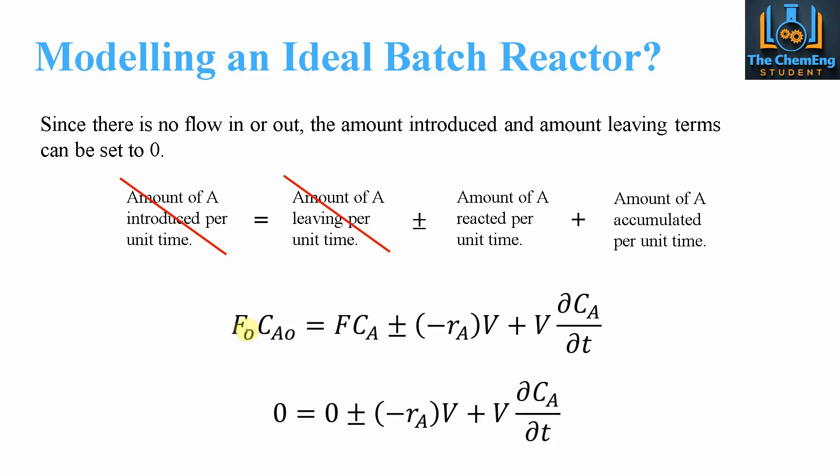These two terms cancel each other out, and what we are left with is -rA*V plus V times the partial differential of Ca over t.